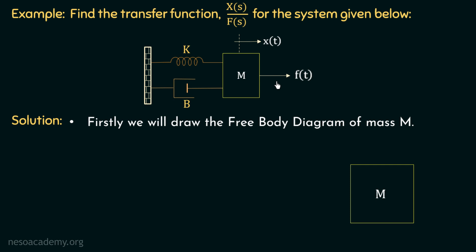If we observe this mechanical system carefully, we can see that the force f(t) is applied on the right hand side, and due to this, there is a displacement x(t) to the right hand side. Now, if this body of mass M moves to the right hand side, the spring and the damper are fixed from one end to this body, so they will also start moving to the right hand side. But at the same time, the spring will try to regain its original position by applying an opposing force to the left hand side. Similarly, the damper will try to oppose the relative motion by applying an opposing force to the left hand side.